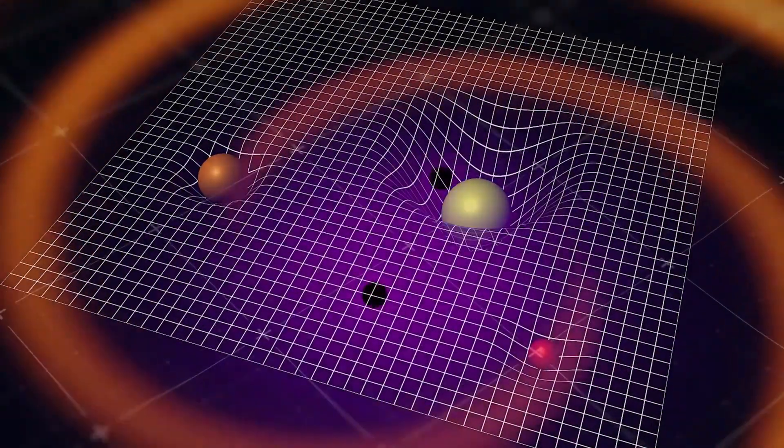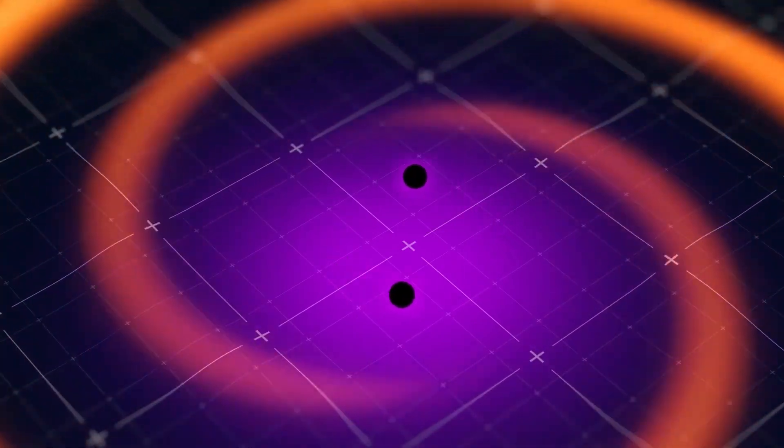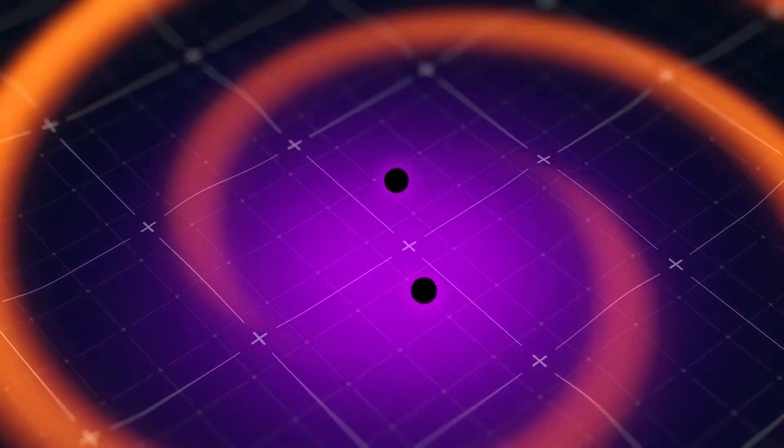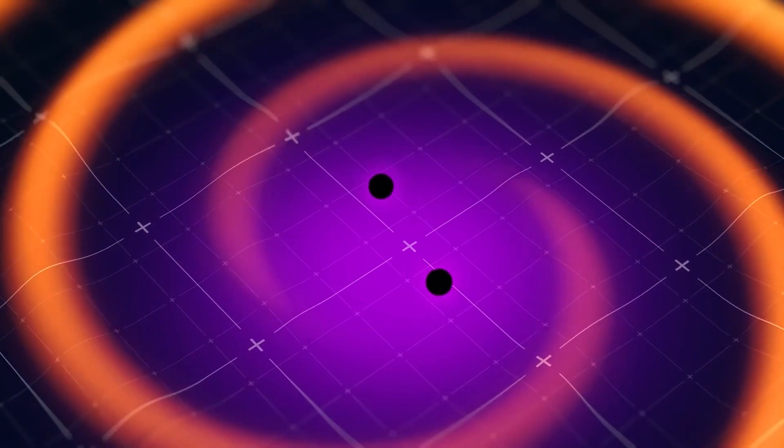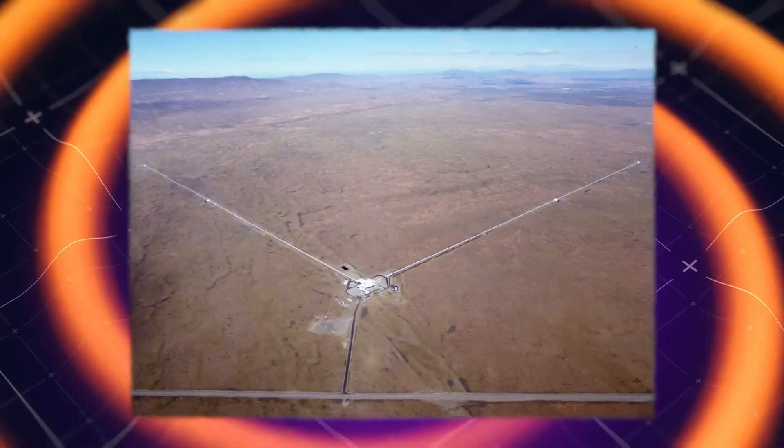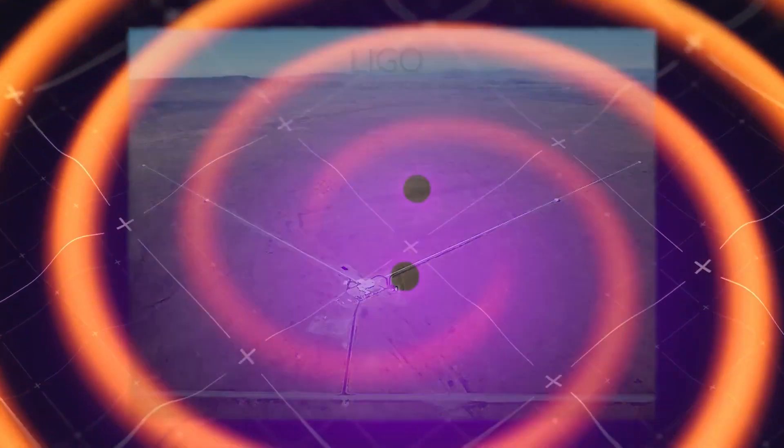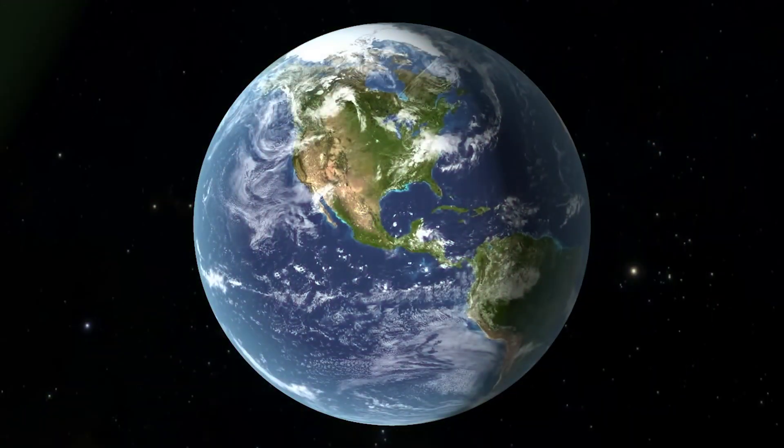When a gravitational wave passes through Earth, it causes minuscule changes in the distance traveled by the laser beams. These changes are measured with extraordinary precision, allowing scientists to detect and analyze gravitational waves.